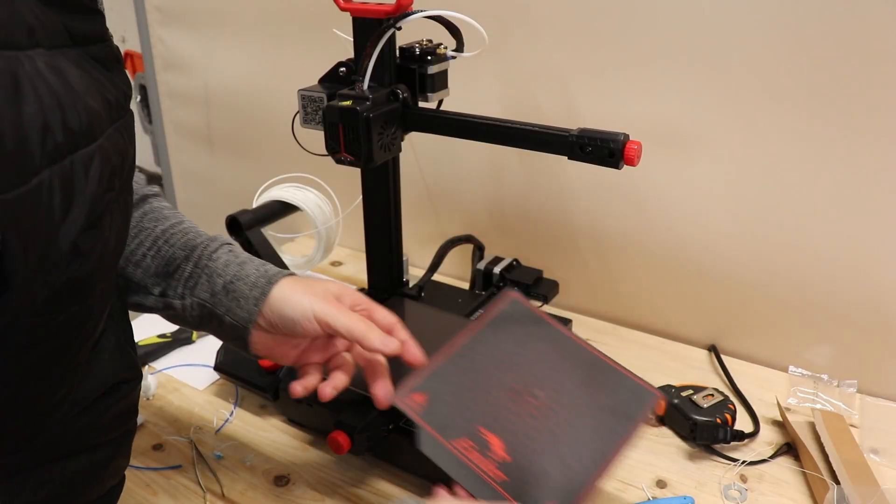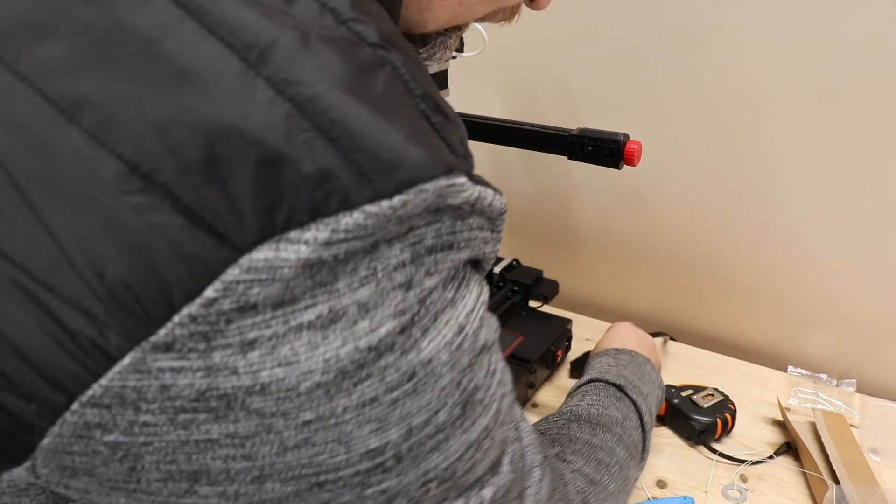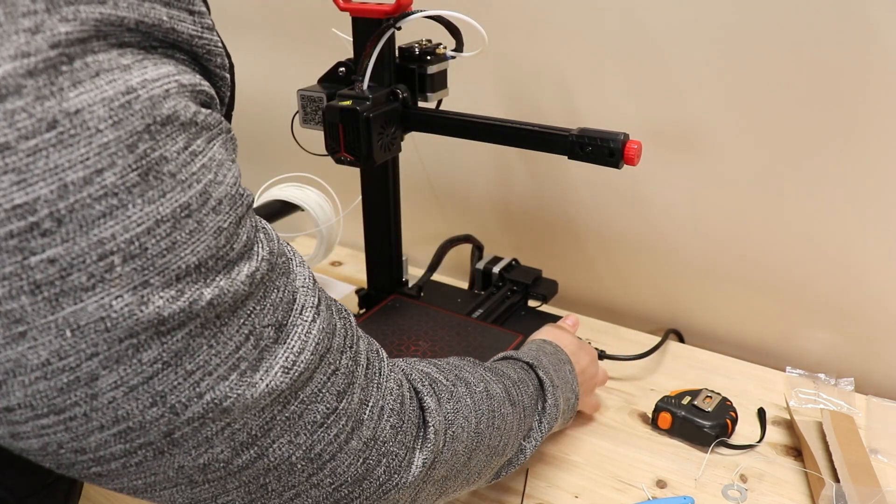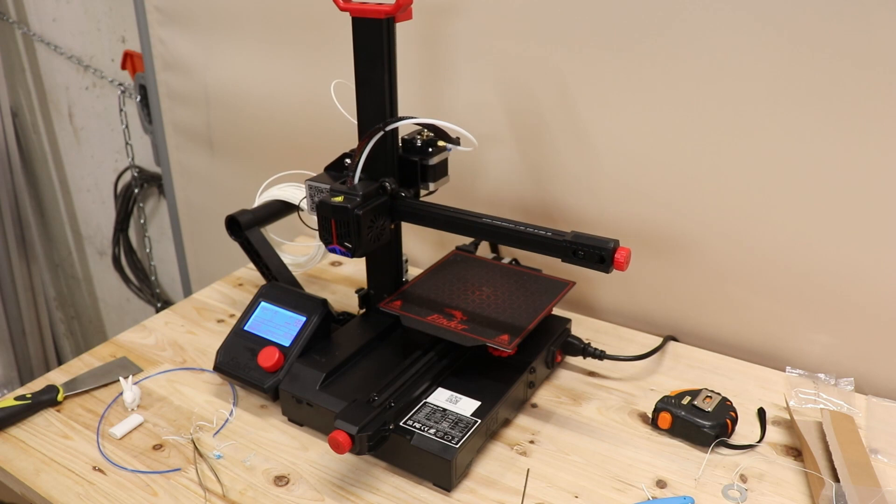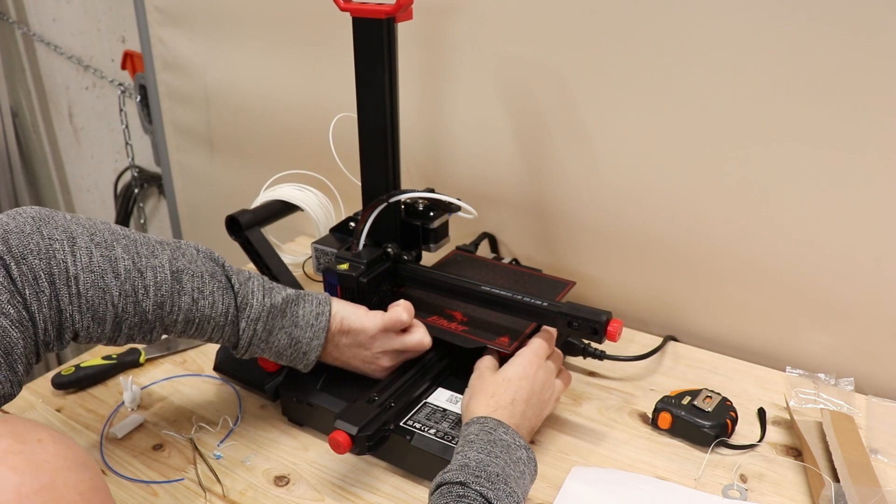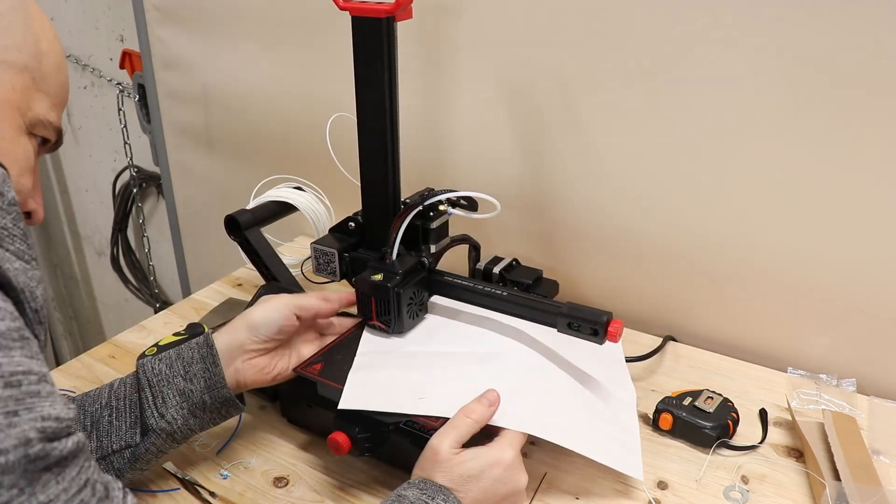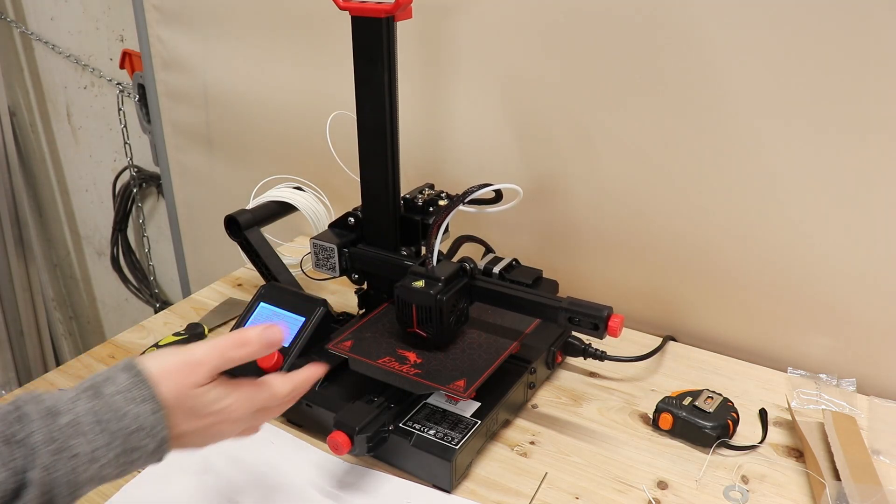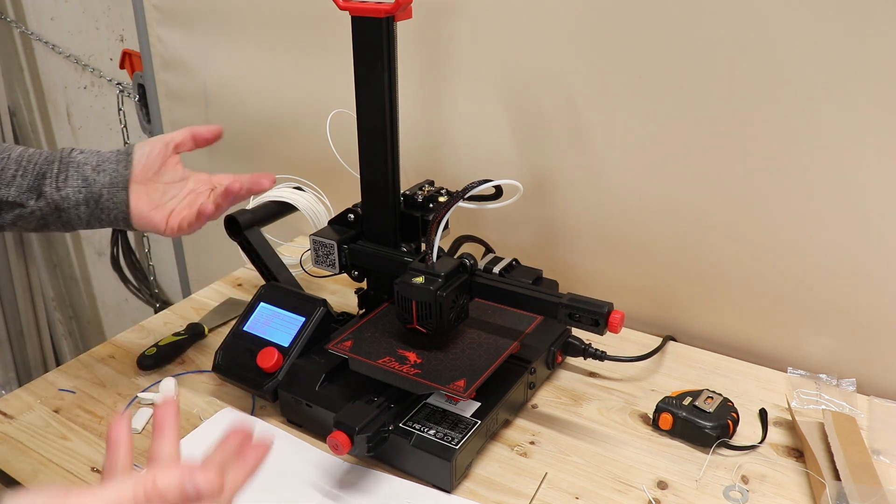I will place this magnetic surface back to the base. Turn on the power and start with the bed leveling. The leveling process is finished. Now I can lift the z-axis higher a little bit and try to print something.